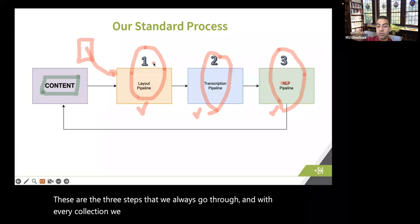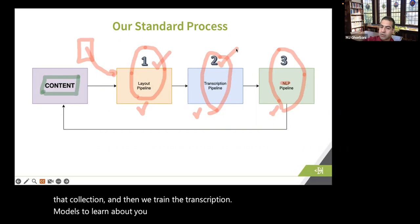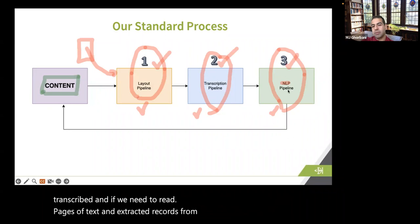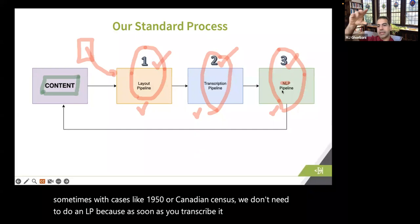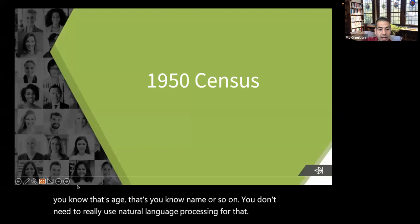With every collection, we train the AI models to learn about its layout, then we train transcription models for the language and how it should be transcribed. If we need to read pages of text and extract records, we use NLP. But with cases like the 1950 or Canadian census, we don't need NLP because as soon as you transcribe a cell in the form, you already know that's the age field or the name field.